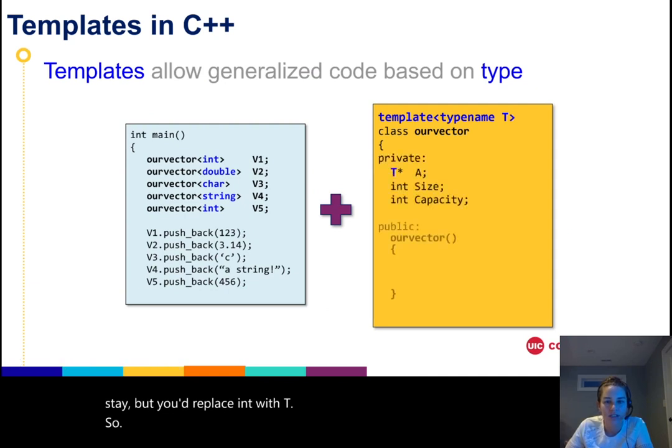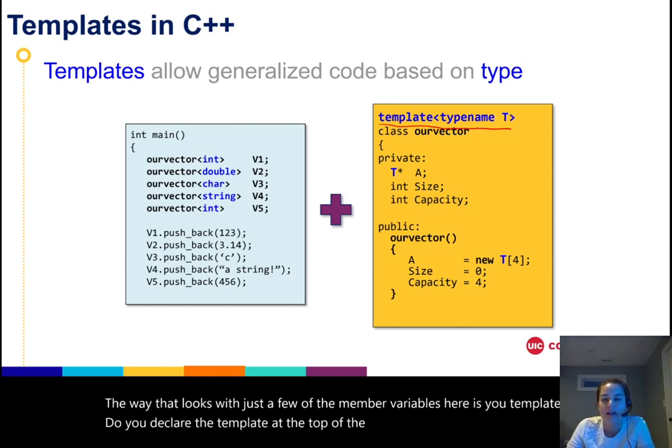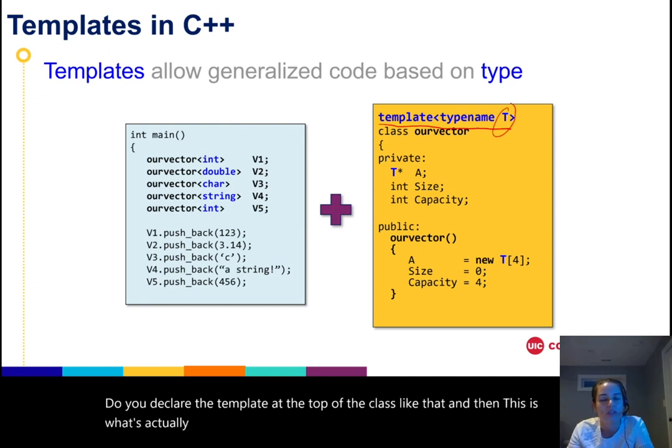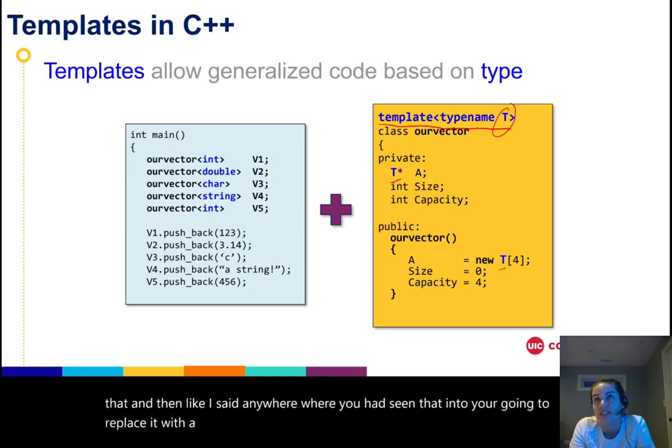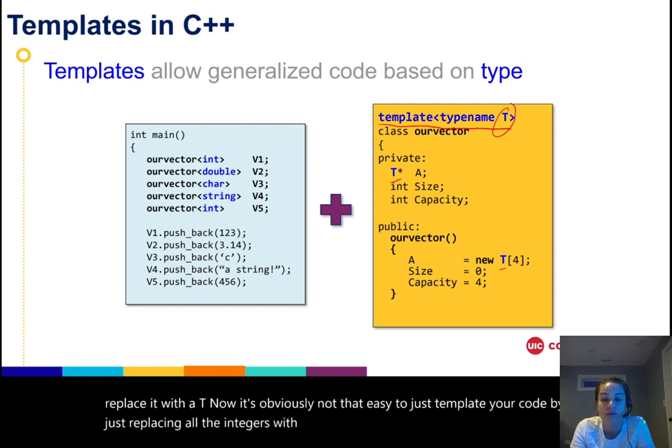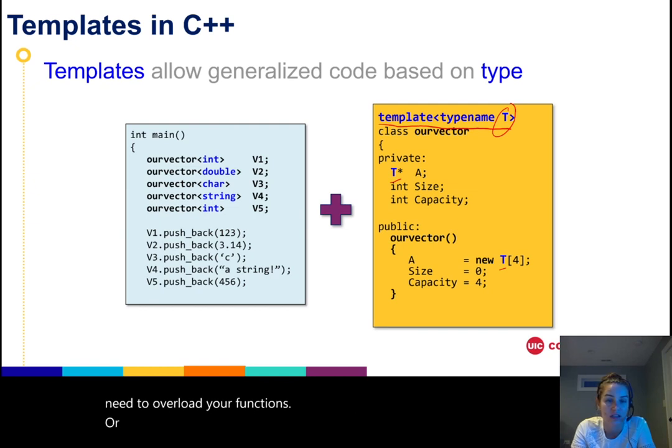So the way that looks with just a few of the member variables is you declare the template at the top of the class like that. And this is what's actually determined what your templated variable is. So you can choose that. And anywhere where you had seen that int, you're going to replace it with a T. Now it's obviously not that easy to just template your code by just replacing all the integers with T's. You also have to make sure that the code that you wrote is general and works for any type. So if it doesn't, then you need to overload your functions or create branches or cases that allow it to work.